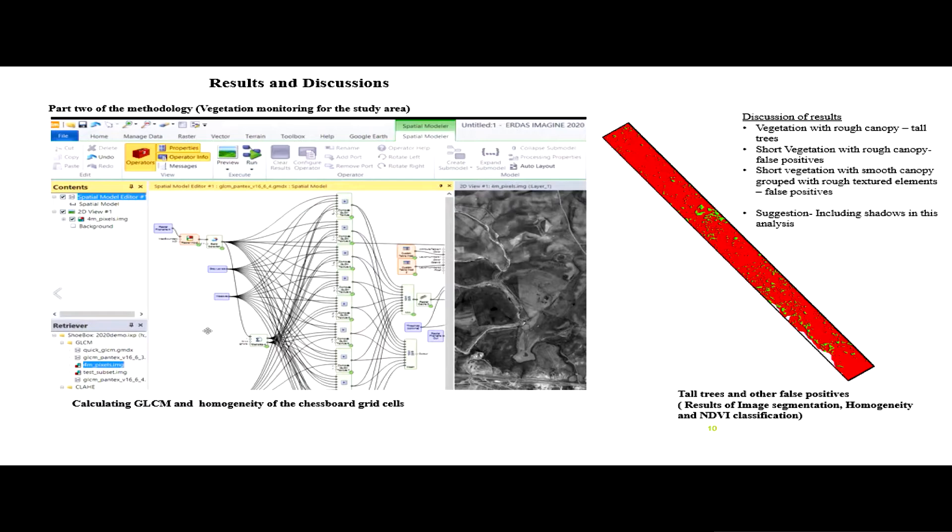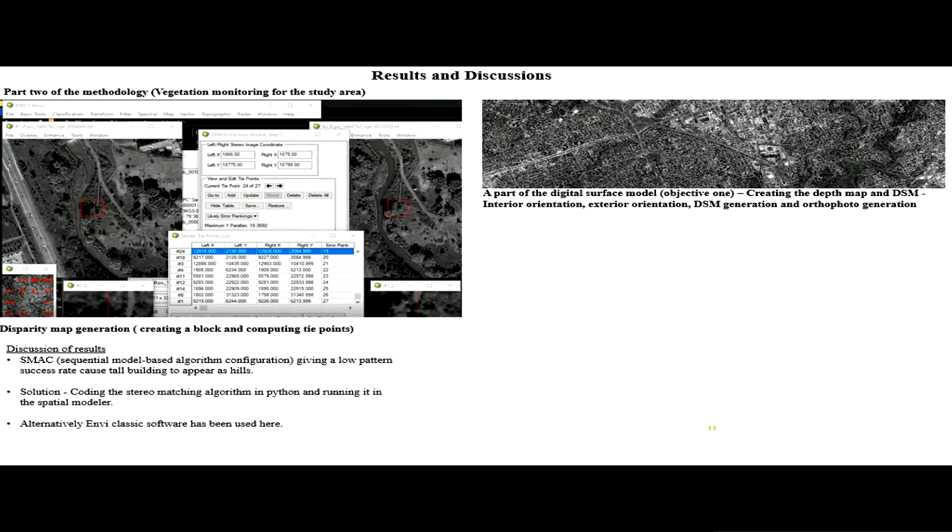That is the result of image segmentation, highlighting the homogeneity and NDVI classification. After getting that data of tall trees, in part two I'm trying to generate the digital surface model.